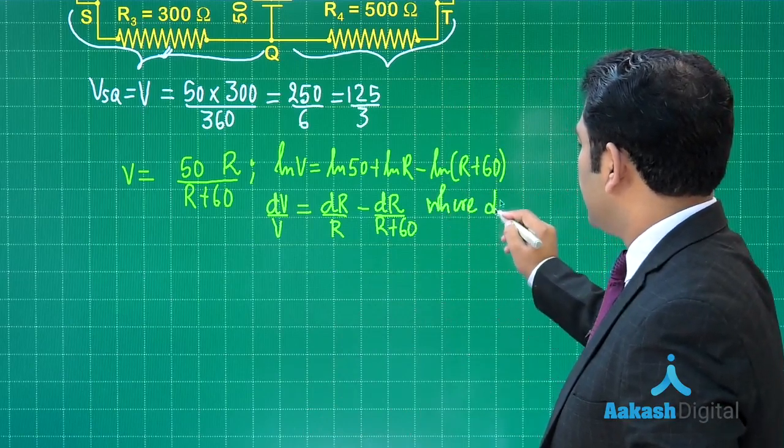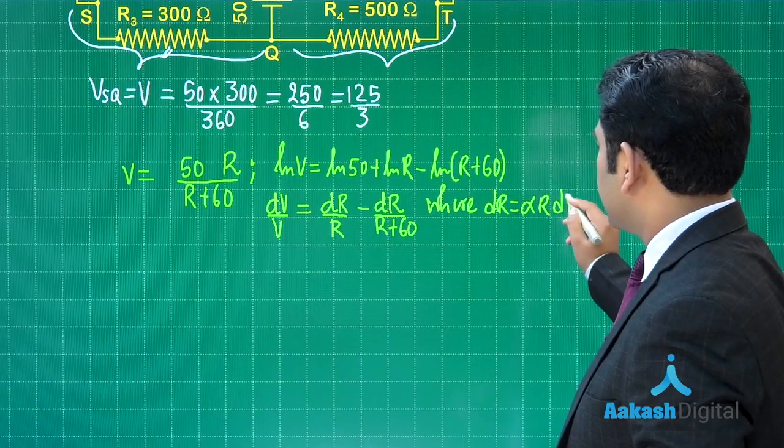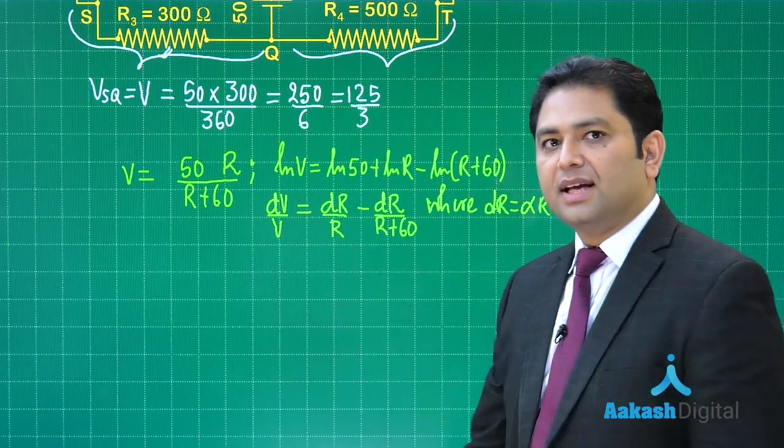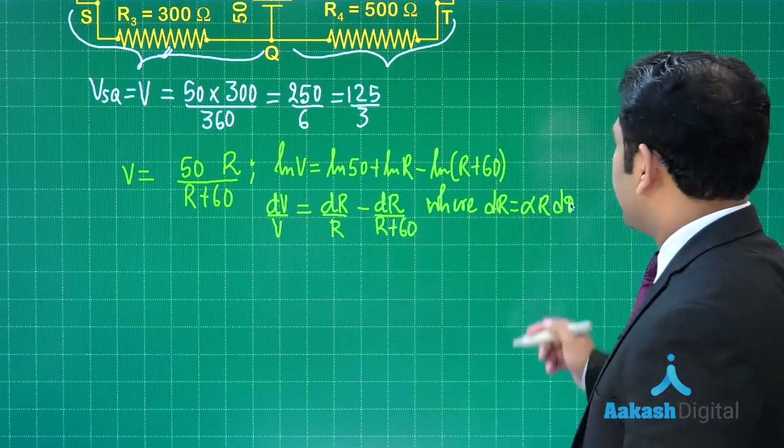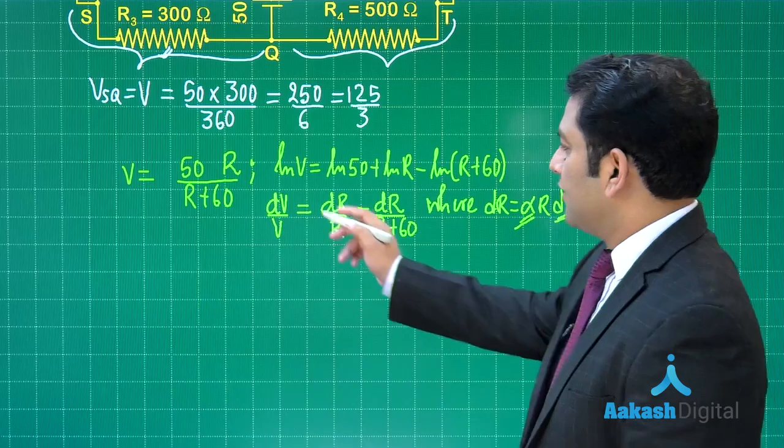The value of dr is alpha r d(theta), that is what you can see. And now you can easily see the values are given, the alpha is given, the change in temperature is given.